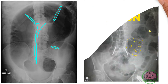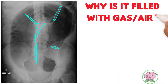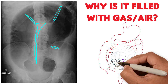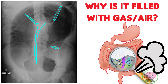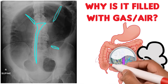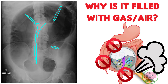But why is the colon filled with gas? The gastrointestinal system is filled with bacteria that produce gas as CO2 or methane. Normally this gas should exit as flatulence — so what is preventing the gas from leaving? It can be an obstruction, located anywhere along the GI tract.